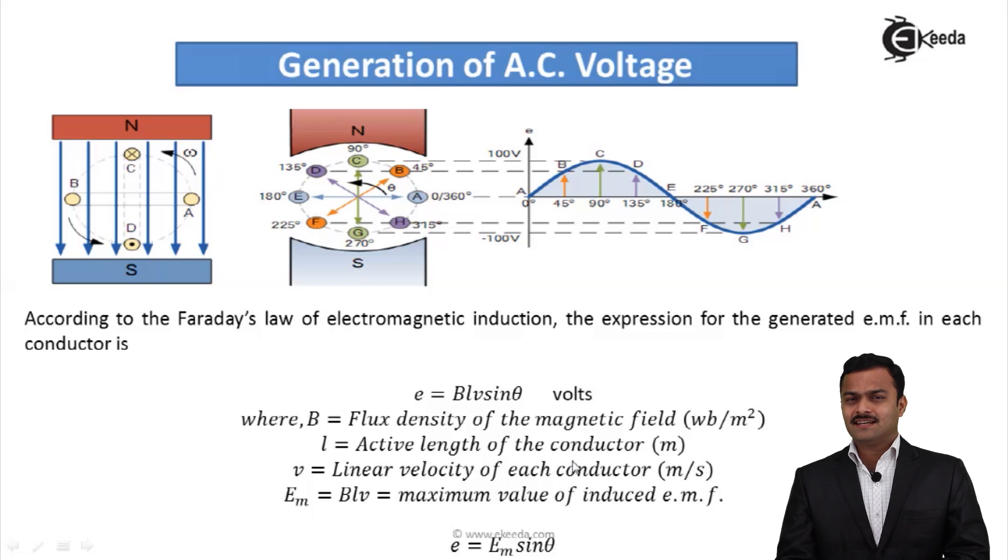L is active length of a conductor, which I have discussed earlier. That is nothing but a portion of conductor which is under the influence of magnetic field. And V is obviously velocity of each conductor.